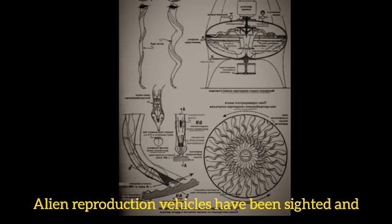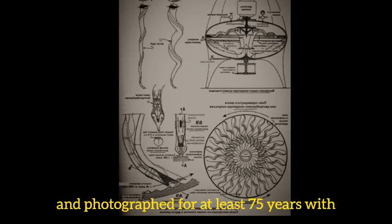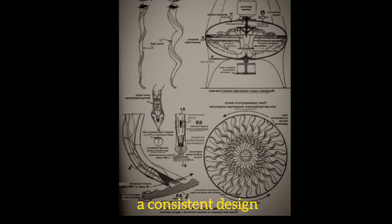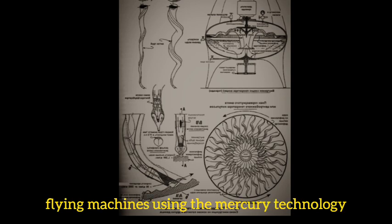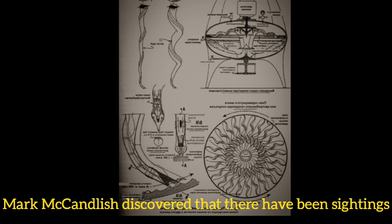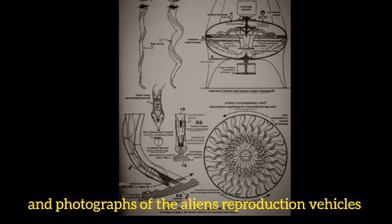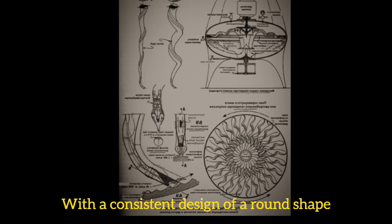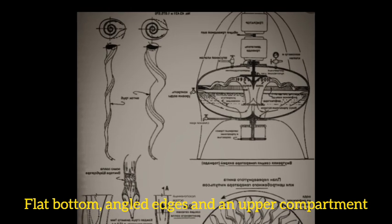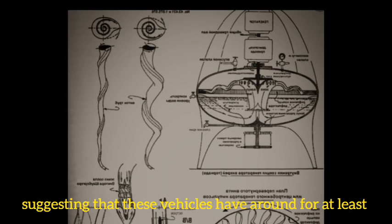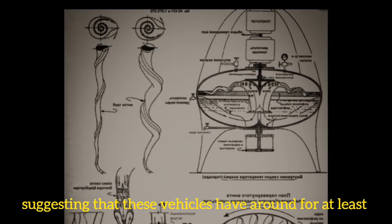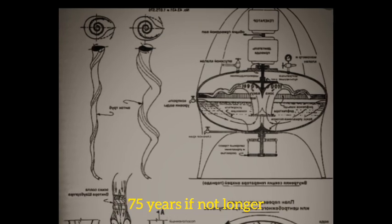Alien Reproduction Vehicles have been sighted and photographed for at least 75 years with a consistent design. Mark McCandlish discovered sightings and photographs of ARVs with a consistent design of a round shape, flat bottom, angled edges, and an upper compartment, suggesting these vehicles have been around for at least 75 years, if not longer.